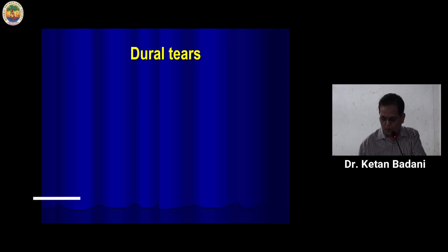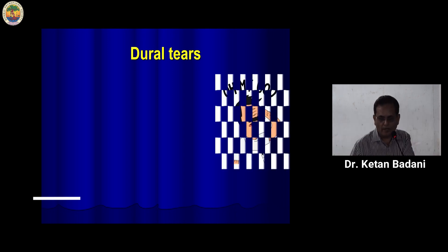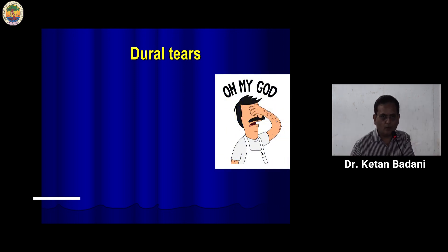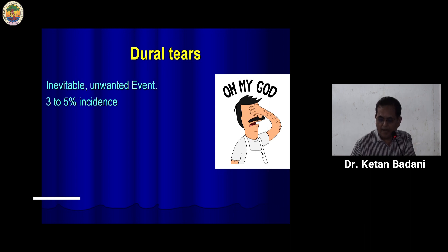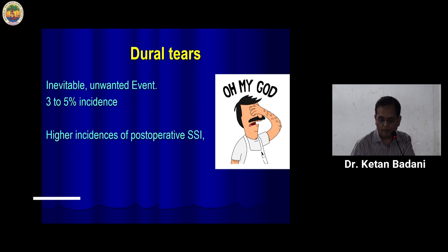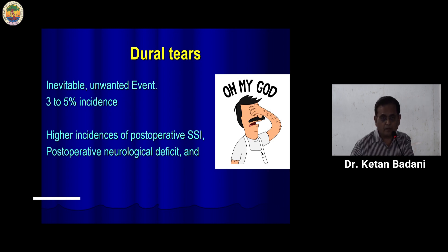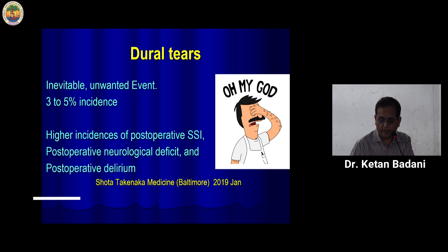Talking about dural tears — whenever this happens in the OT, it almost evokes a common response amongst everybody. With an incidence of 3 to 5%, it forms a significant part of complications during spine surgery, leading to higher incidence of post-operative infections, post-operative neuro deficits, and also post-operative delirium as shown by some studies.